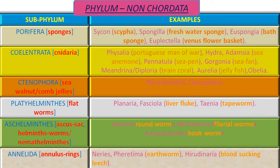The next sub-phylum is Anilida. The word Anilis means Rings — that is, these animals are ringed animals. Examples of this sub-phylum are Nereis, Pheretima which means Earthworm, and Hirudinaria which is the Bloodsucking Leech.